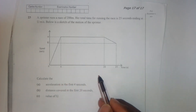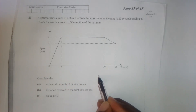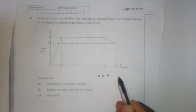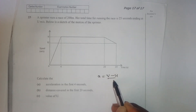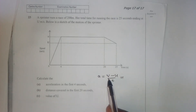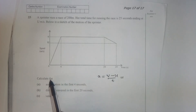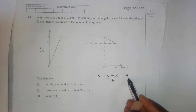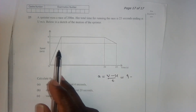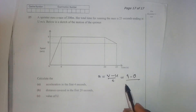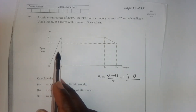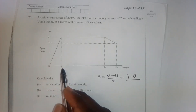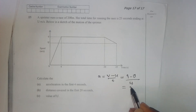Acceleration equals final velocity minus initial velocity over time. The final velocity v is nine, the initial velocity is zero since it started from rest, and time is four seconds.